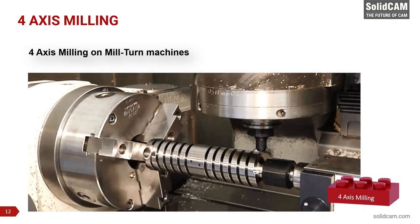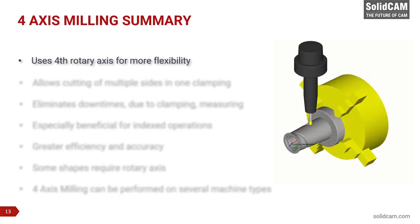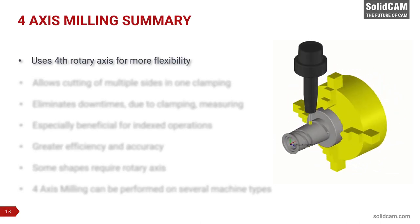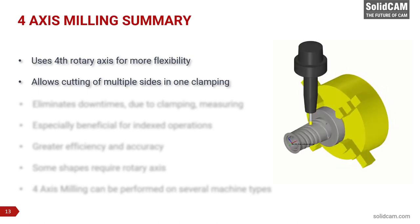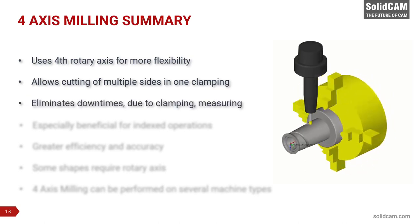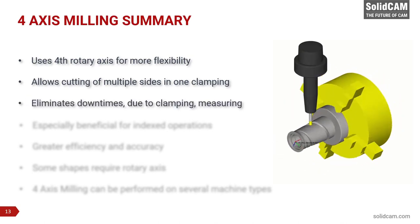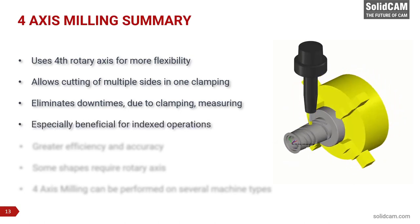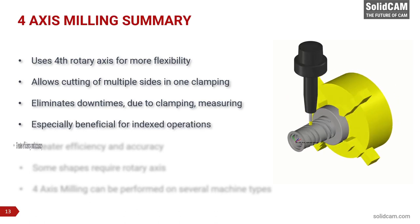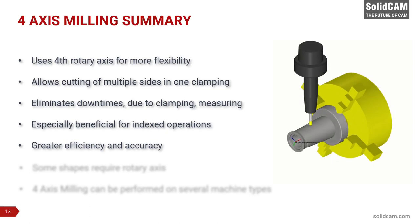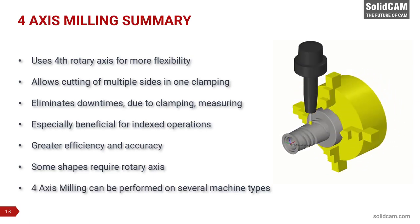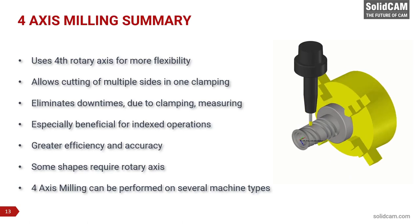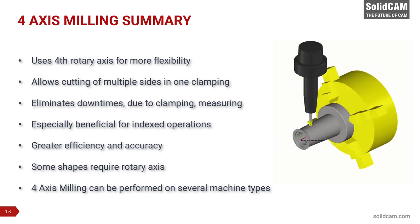Mill-turn machines also have the capability of performing 4-axis milling. In summary, 4-axis milling uses 4 axes — X, Y, Z for linear motion, and the rotary A-axis — allowing the machining of multiple sides in one clamping. Greater machining efficiency and part accuracy can be achieved. It's especially beneficial for indexed operations, with its greatest value being higher accuracy and eliminated downtime. 4-axis milling can be performed on vertical milling machines with an additional rotary axis, horizontal milling machines, and mill-turn machines.